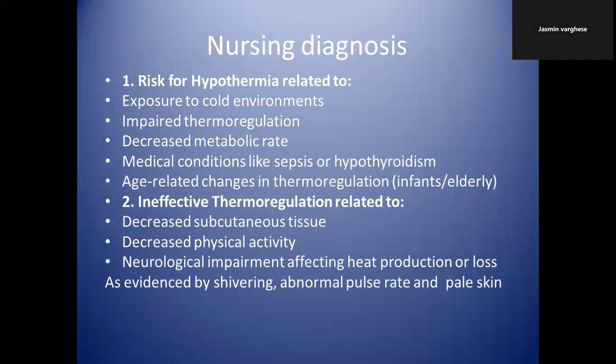Now, for the nursing diagnosis — you write it depending on the condition of your patient. There will be many reasons for hypothermia, so you have to check the case sheet or talk to the patient or team to understand the exact reason. Examples include: risk for hypothermia related to exposure to cold environment; risk for hypothermia related to impaired thermoregulation; risk for hypothermia related to decreased metabolic rate; or medical conditions like sepsis, hypothyroidism, or age-related changes in thermoregulation.